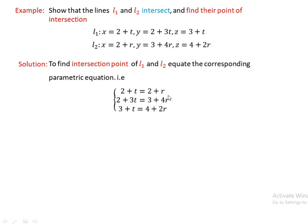From the first equation: t minus r equals 0. From the second equation: 2 plus 3t equals 3 plus 4r. Subtracting and simplifying: 3t minus 4r equals 1. Solving the system gives t minus r equals 0, and combining equations yields t equals r equals minus 1.